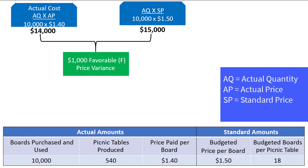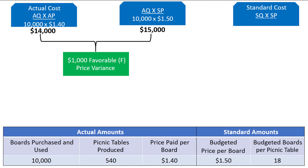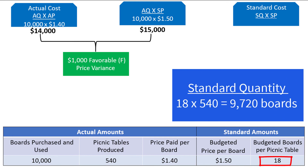Next we need to calculate the standard cost, which is equal to the standard quantity (SQ) times the standard price (SP). The standard quantity is the amount of materials that should have been used to create the number of units that were produced. The standard quantity can be found by taking the 18 boards per table multiplied by the 540 tables produced, which equals 9,720 boards. This can be multiplied by the $1.50 standard price per board to get $14,580 as our standard cost.